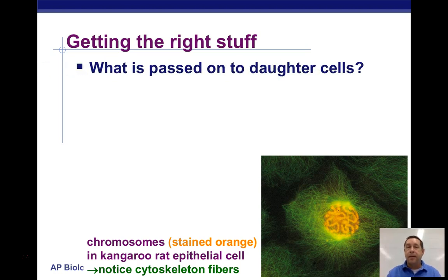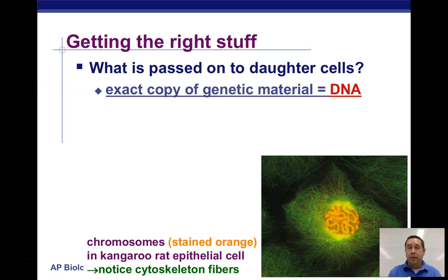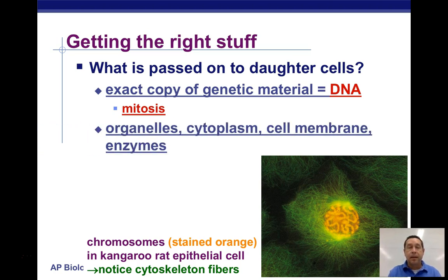How do you get the right stuff passed on to the daughter cells — the cells that result from cell division? First, you've got to make an exact copy of the genetic material; the DNA has to be copied. Then the cell has to go through the stages of mitosis, if we're talking about something more complex than a bacterium. It also needs to make copies of organelles, some cytoplasm, new cell membrane, enzymes, and various other things.